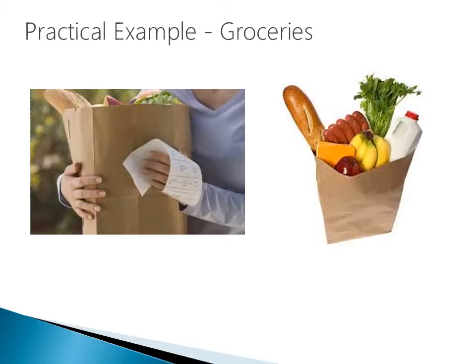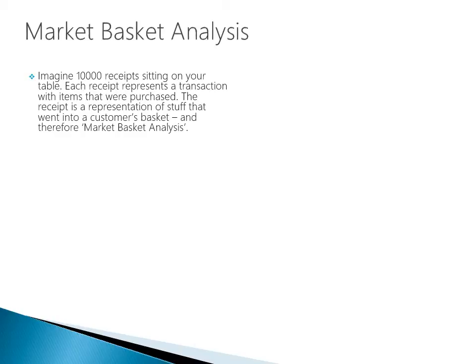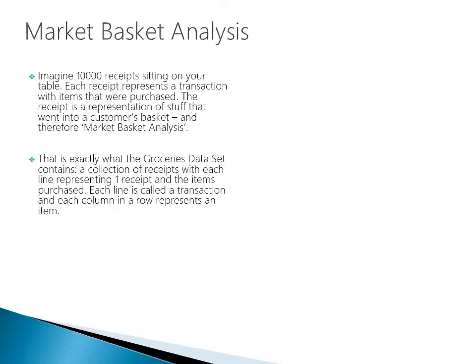Now let's go through a practical example using the a priori algorithm, evaluating a grocery store. Imagine you have 10,000 receipts sitting in front of you — each receipt is a grocery store transaction representing items that were purchased. Each receipt represents a customer's basket — and therefore it's called a market basket analysis. When I go to the grocery store and fill up my cart, that's my market basket, and the receipt is the record of all items purchased.